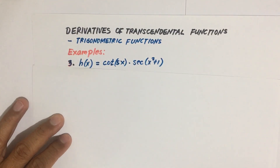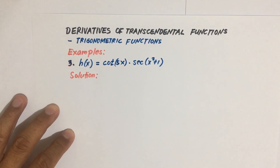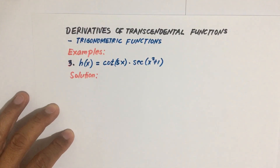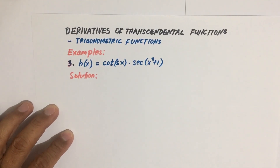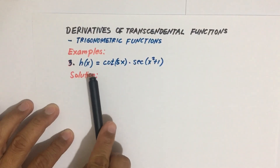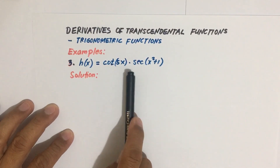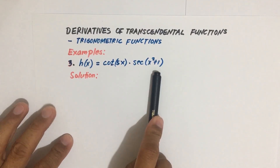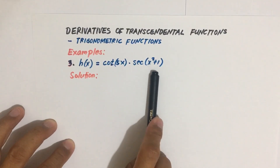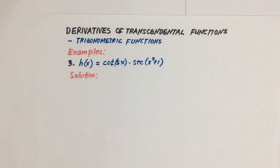Have you solved this problem yet? For the third problem, we are given h of x equal to cotangent of 5x times secant of the quantity x squared plus one.